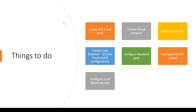Here's what we are going to do: first create VM1 and VM2, creating the virtual network during VM1 creation so both VMs are in the same network. Then we'll enable IIS in the VMs, create the load balancer with a frontend IP configuration, create the backend pool and add the VMs, configure the health probe, and configure the load balancing rule. Once done, we'll check if the load balancer works and test failover by switching off VM2.